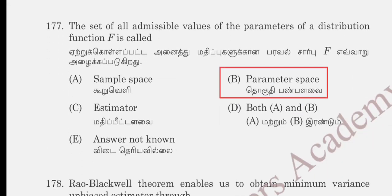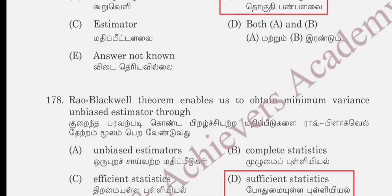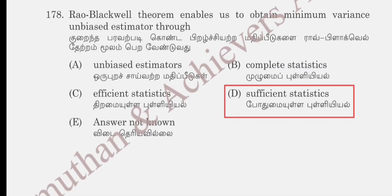Question 177: the set of all admissible values of the parameter of the distribution of X is called the: sample space, parameter space, estimator, or both A and B. Option B, parameter space, is the correct answer. Question 178: the Rao-Blackwell theorem enables us to obtain the minimum variance unbiased estimator through an unbiased estimator and: complete statistics, efficient statistics, or sufficient statistics. Sufficient statistics is the correct answer for question 178.